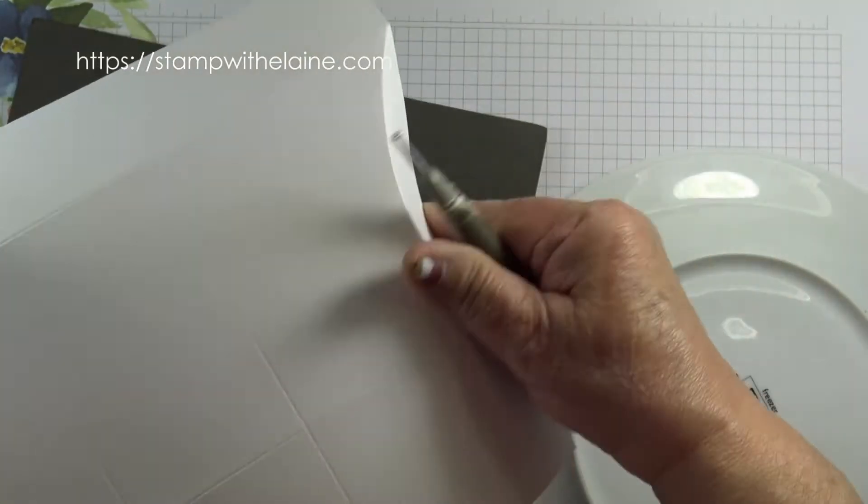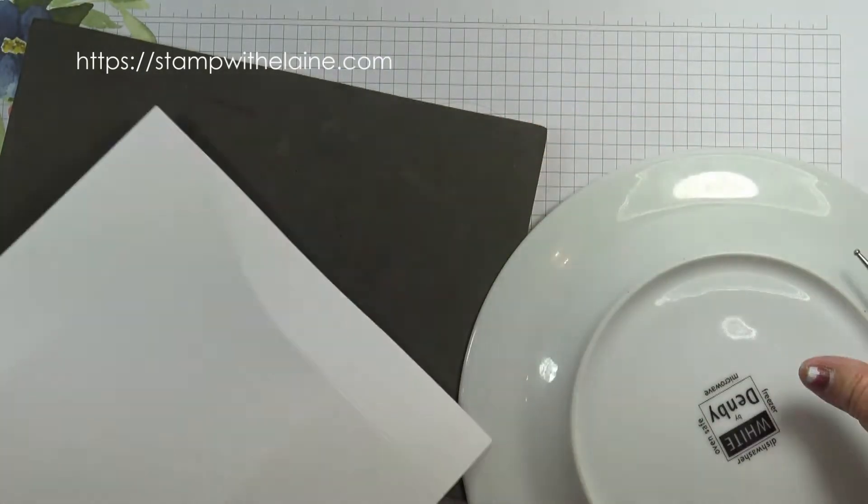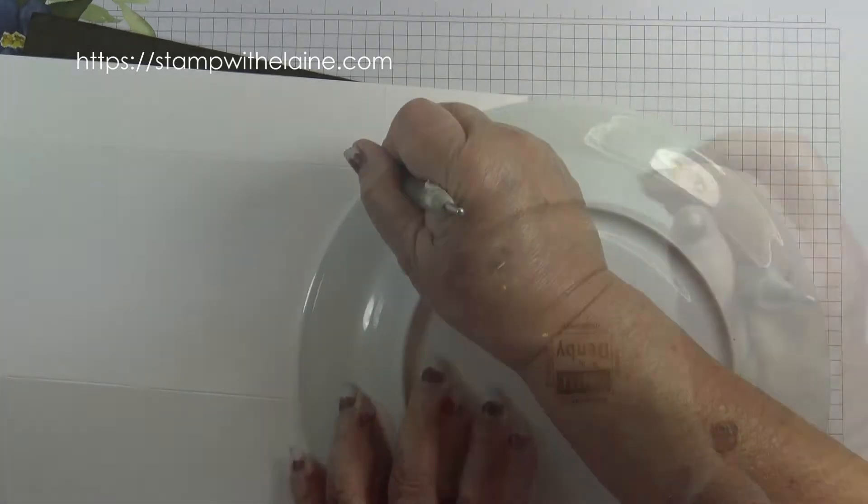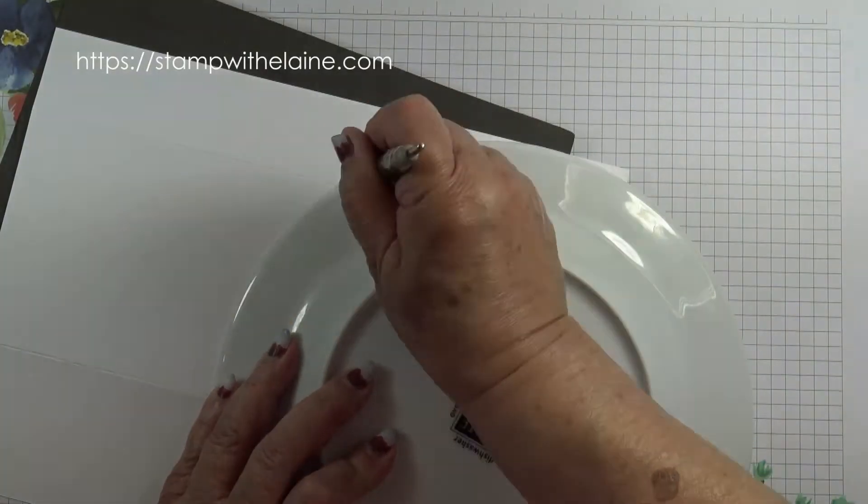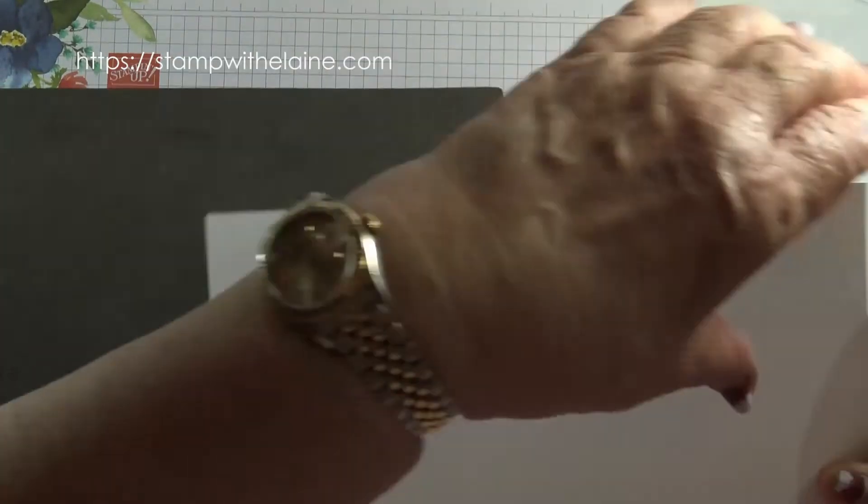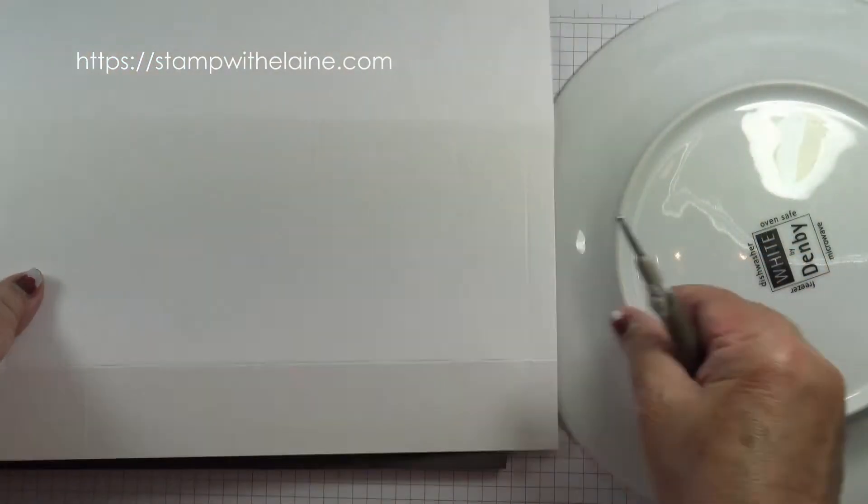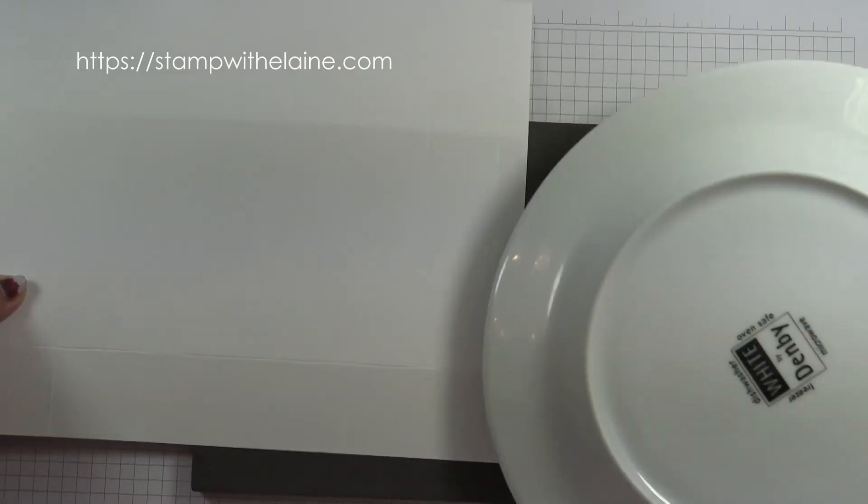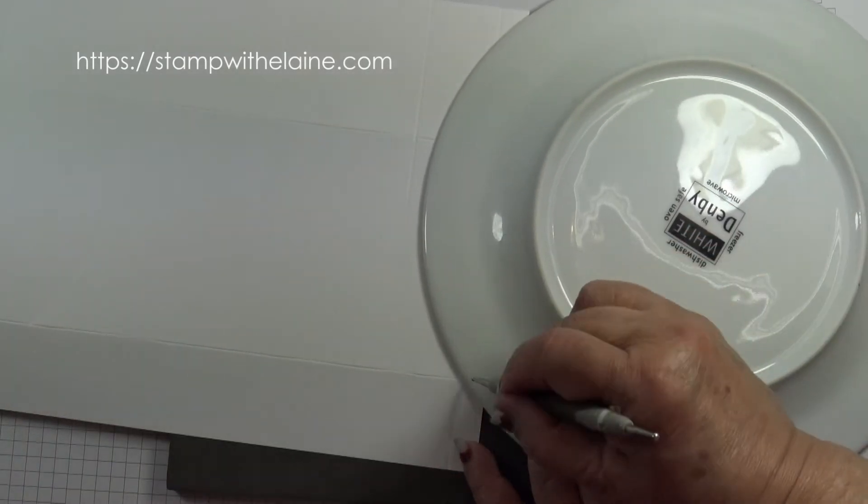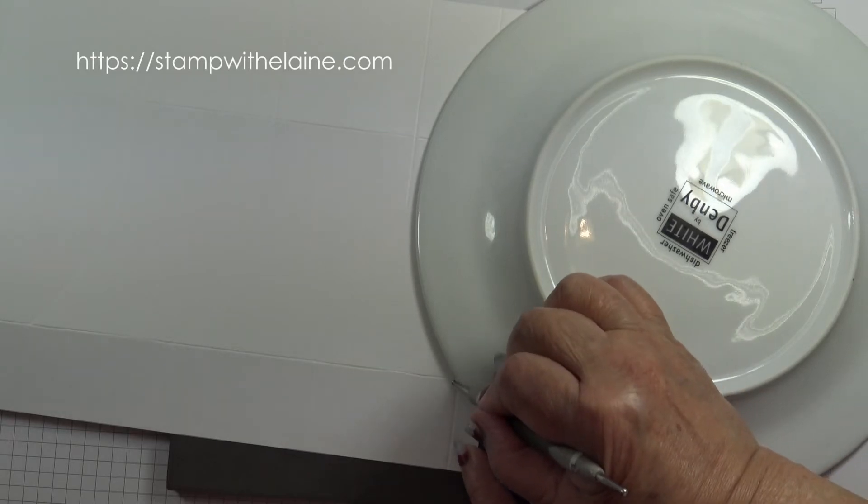So that's the start of your curve. So I'm just going to do it all on one side and then swap it round afterwards. Now I want to score in the other direction. So I'm going to turn my card upside down so it's easier to access. And you want to score from this point.